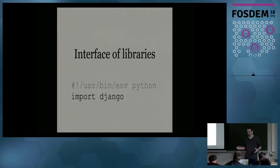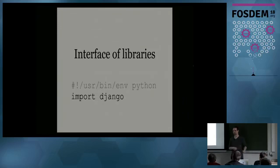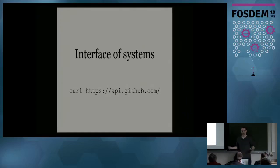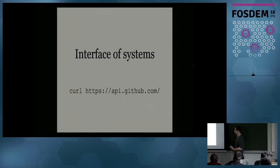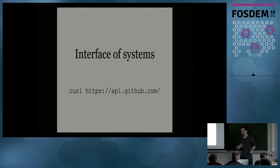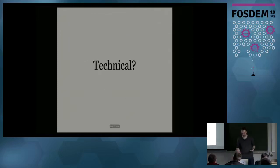We have interface of libraries. As a Python developer I can write my Python program, I can install Django, which is a web framework, and then I can use its interface to leverage whatever Django offers to me. Then the internet came and we started to talk about interface of systems. So I can call the GitHub API and through the GitHub HTTP interface, I can do whatever I need with GitHub.